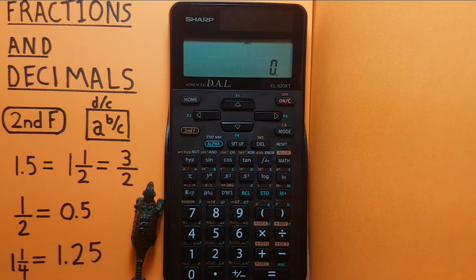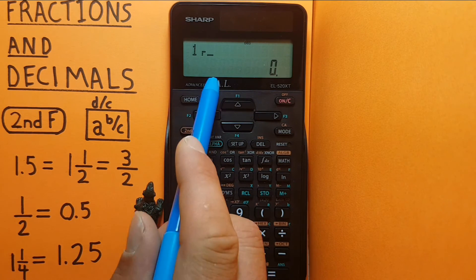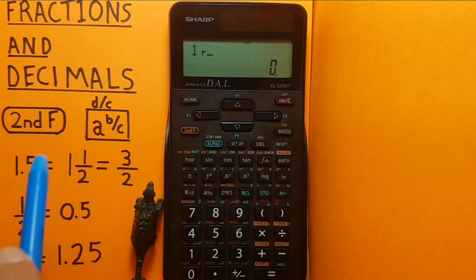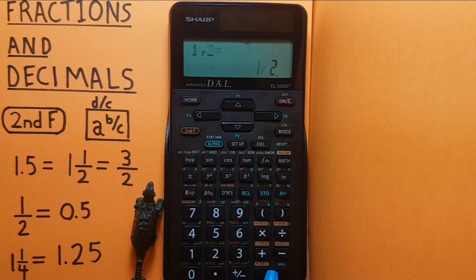What if we have a fraction that we wish to convert to a decimal? To enter this, let's say we have 1 over 2. We would enter 1 a b over c. See there's that little r again indicating a different level. 2 equals.